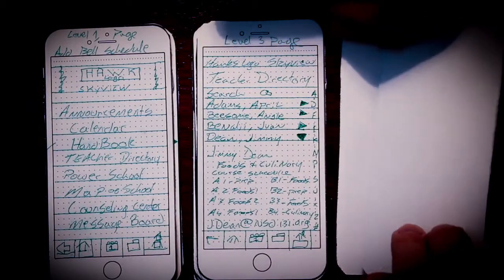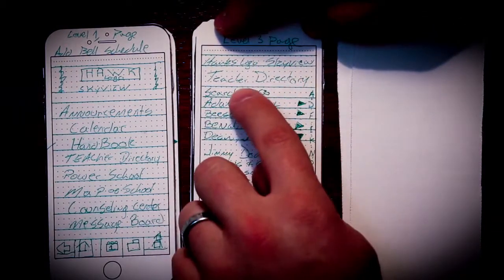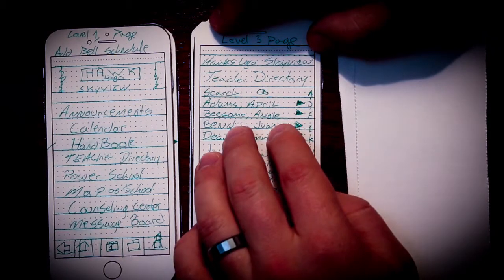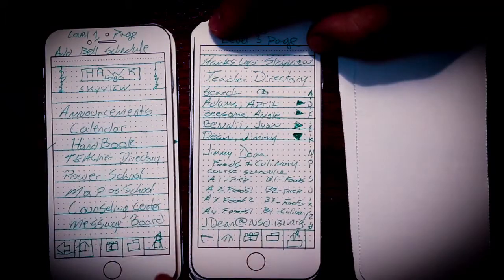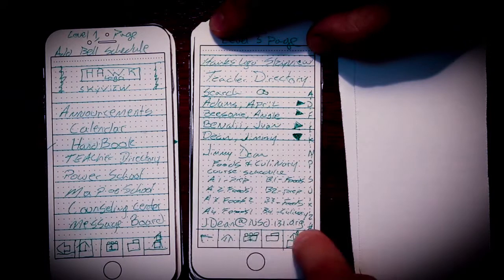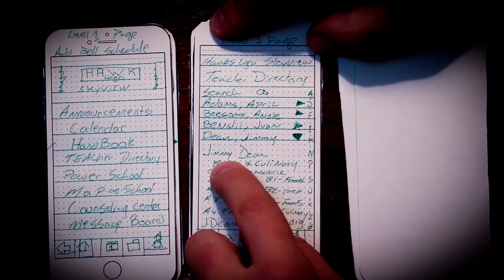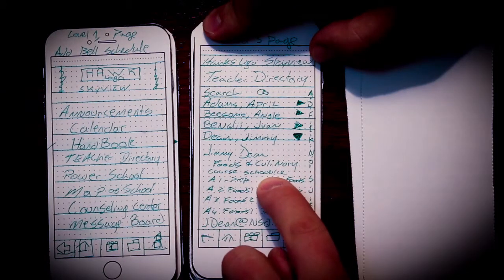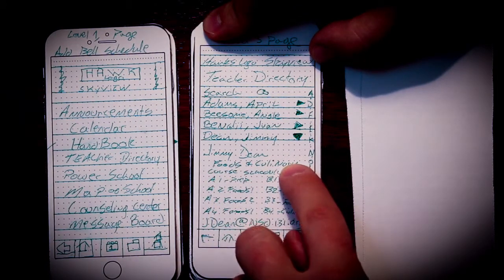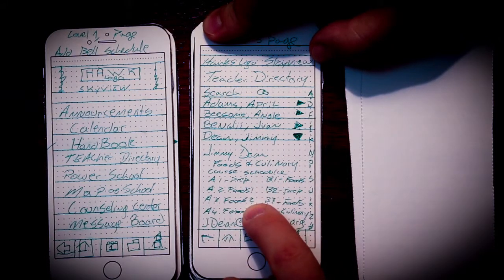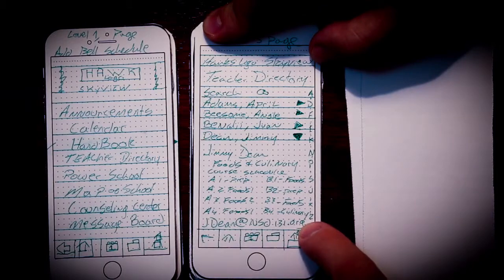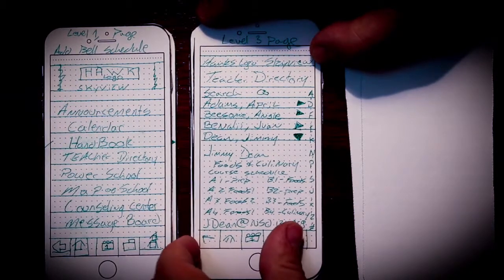So then we used this level 3 page similarly for the teacher directory, A through Z down on the side. This would look very similar to a contacts page you would find in your Apple device. And then down here are the buttons that are the same. When those open up, it would give you the teacher's name, the foods and culinary courses, and their schedule. So this is a foods and culinary teacher, Jimmy Dean. A1 through 4 for his 8A, B1 through 4, and then his contact email address down here at the bottom for the teacher directory.